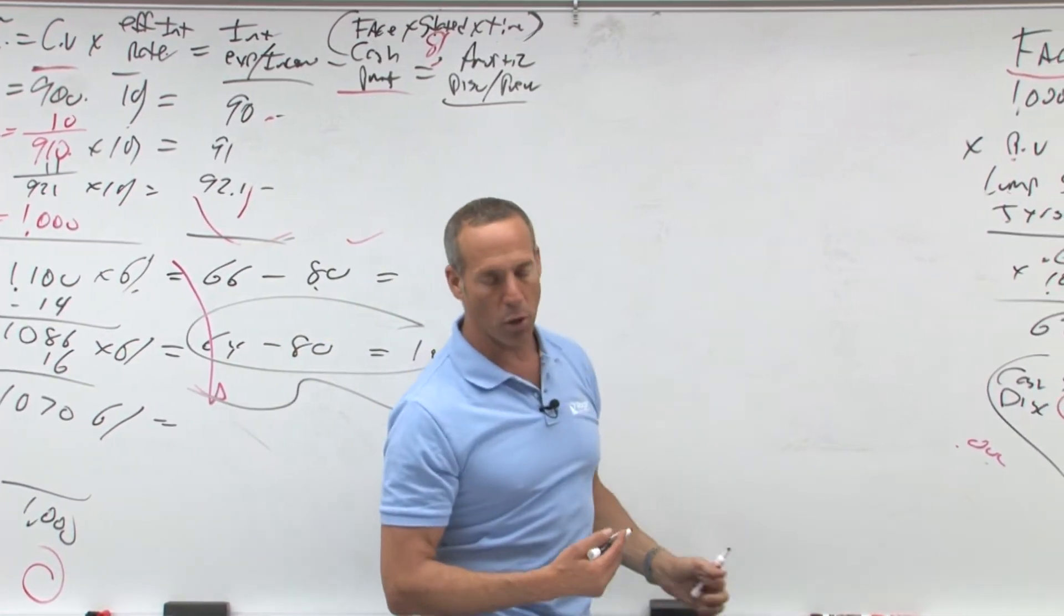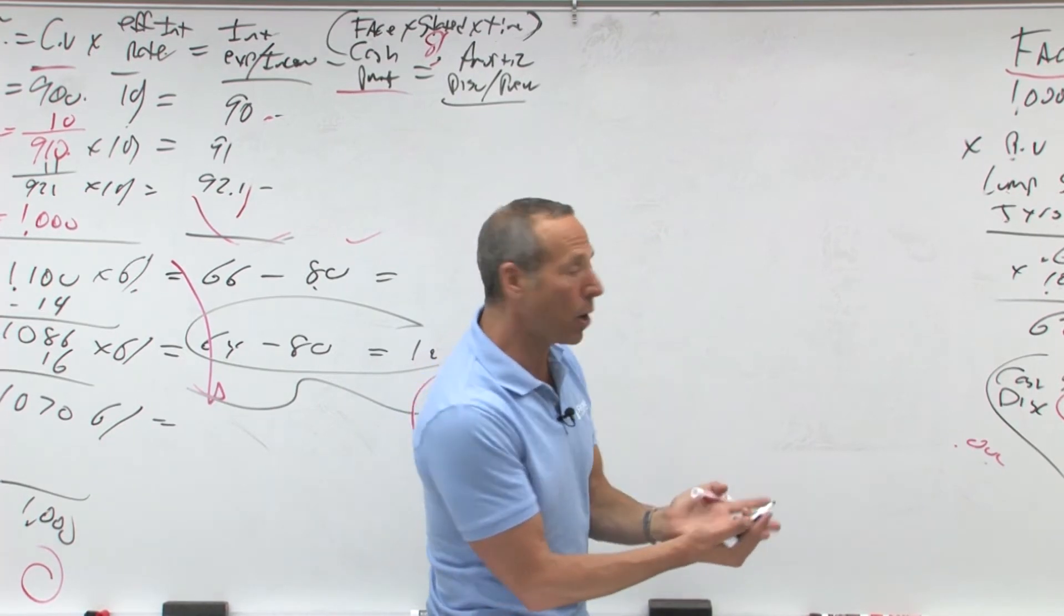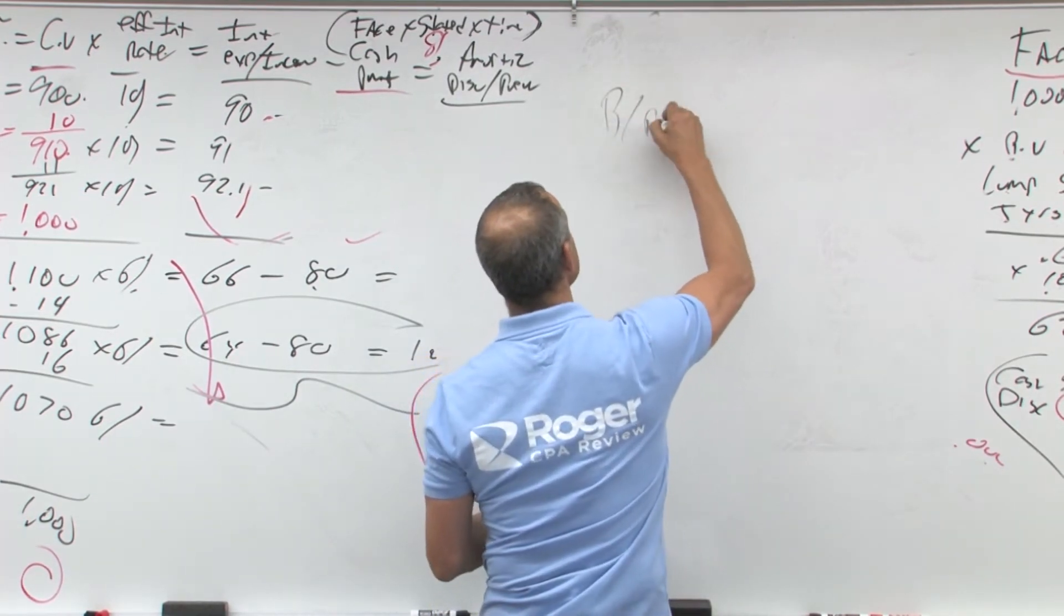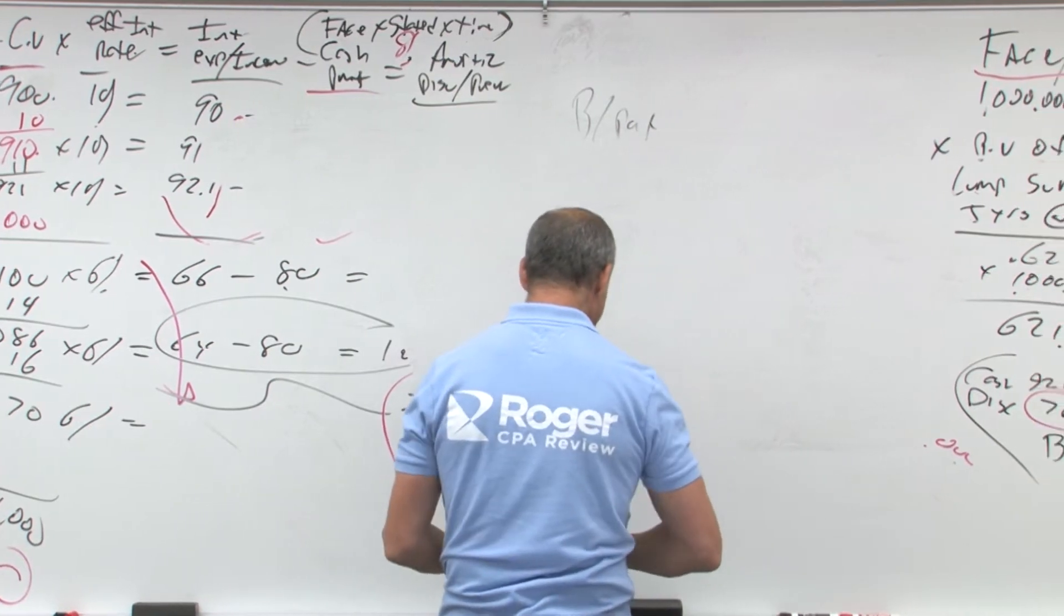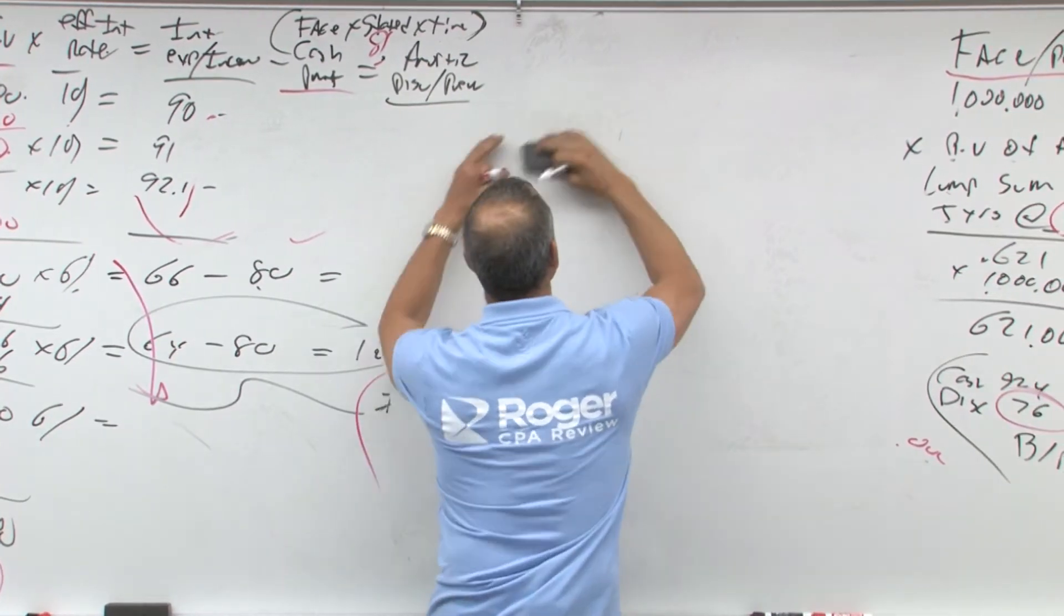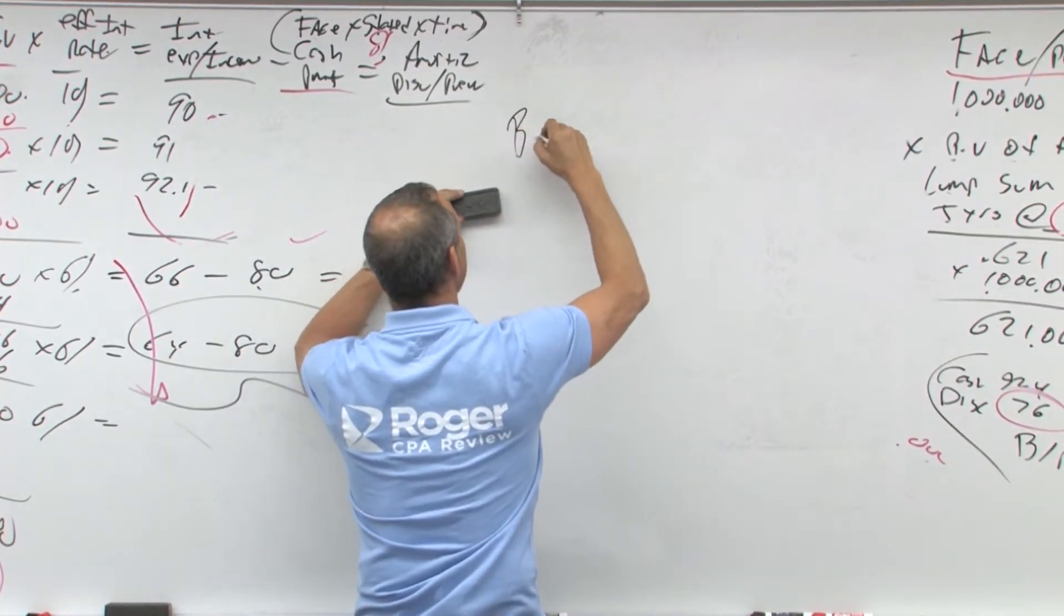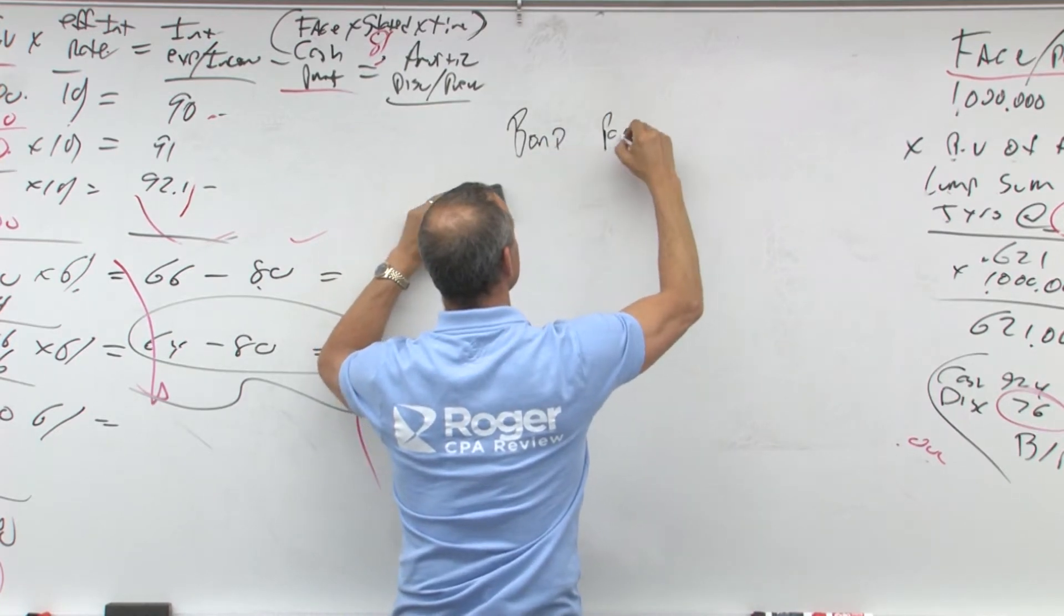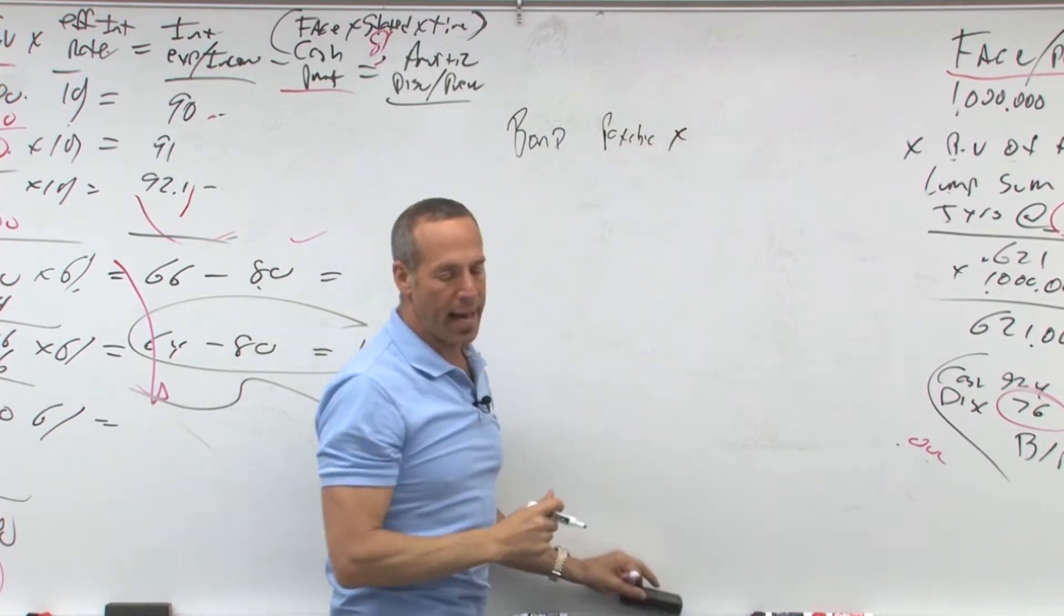So in doing this, what are we going to do? When we set it up, we credited bonds payable. So what do we do? Debit bonds payable. So we're going to debit out the bonds payable and that's going to be for the bond payable. So we're going to debit that out.